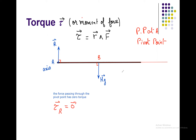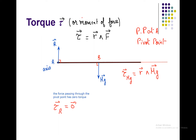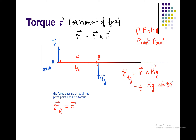Now I want to calculate tau of mg. τ = r × mg, where r is the position vector from the pivot point to mg. The length of r equals L/2. So we get: τ = (L/2) × mg × sin(90°) = (L/2) × mg, since the angle between r and mg is 90 degrees, and sine 90 equals 1.